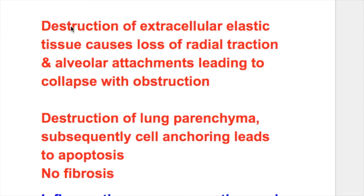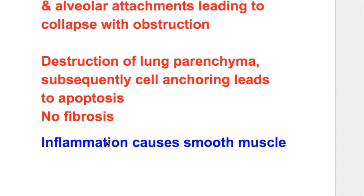In emphysema, destruction of extracellular elastic tissue causes loss of radial traction and alveolar attachment, leading to collapse with obstruction. Destruction of lung parenchyma and subsequent cell scoring leads to apoptosis. There is no fibrosis in emphysema.